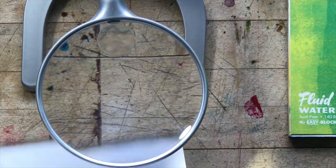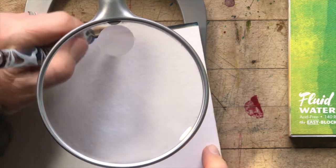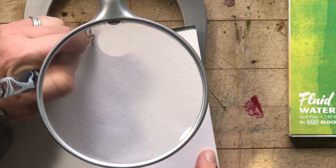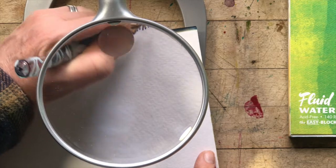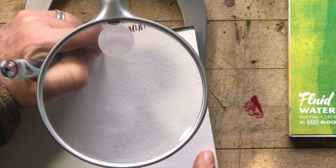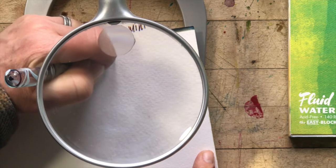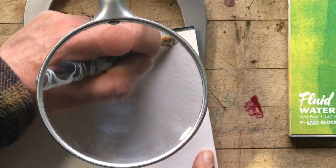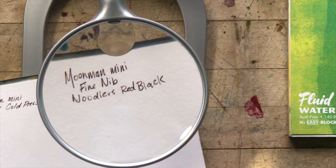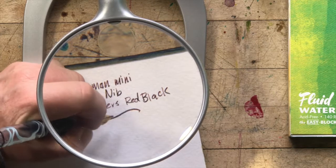This is the Fluid watercolor paper. This is also a cold press. Notice that even though it is also a cold press, it has a lot less texture than the Strathmore. That's just one of those things that as you're dealing with different brands of paper there's just variety and there's really no substitute for seeing them in person. Paper is one of those things that's really hard to know until you actually see it.